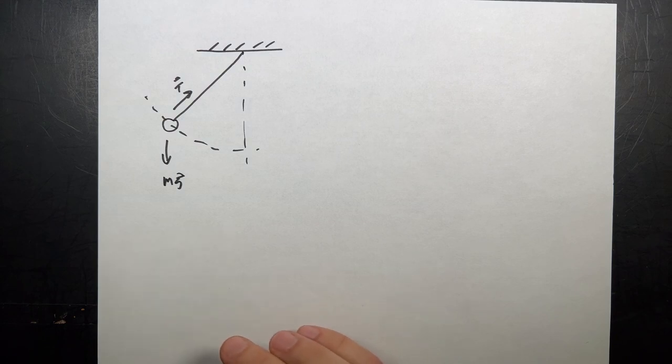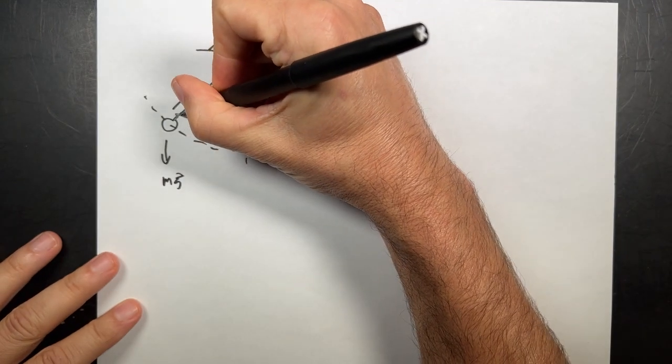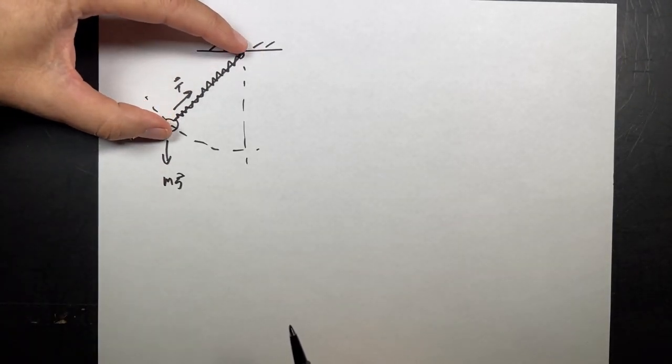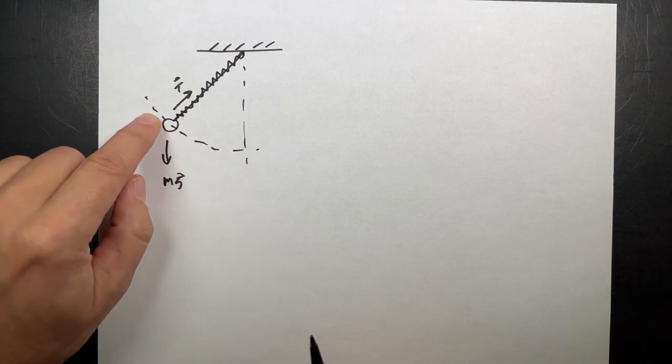So we can cheat. The way we cheat is to replace the string with a spring. I can calculate the force on this ball due to a spring because it depends on how much it stretches. What will happen is that the ball is not going to move in a circular path — it's going to oscillate. But if I make this really stiff, then it mostly stays in a circular path. And it will mostly work.